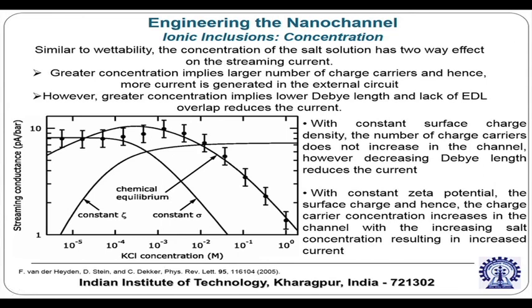The behavior also depends on the boundary condition for electrokinetics. With a constant surface charge density boundary condition — somewhat more realistic than constant zeta potential for nanofluidic channels — the number of charge carriers does not increase in the channel; decreasing the Debye length reduces current, as seen in the streaming conductance versus concentration curve reported in Physical Review Letters. With constant zeta potential, surface charge and charge carrier concentration increase with increasing salt concentration, resulting in increased current.